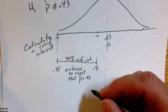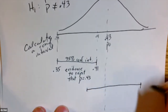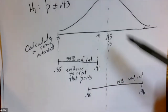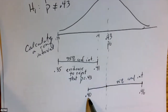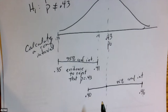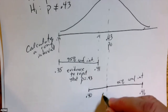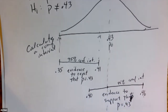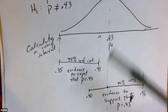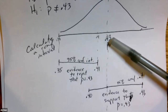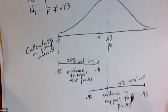On the other hand, if the confidence interval ranged from 0.40 to 0.46, notice that 0.43 is inside that interval. We'd be 95% confident the true population proportion is between 0.40 and 0.46. Since what we assume to be true is in that interval, this is evidence to support that the population proportion is 0.43. So: if the confidence interval does not contain p-zero, reject the null hypothesis; if it does contain p-zero, there is not enough evidence to reject.